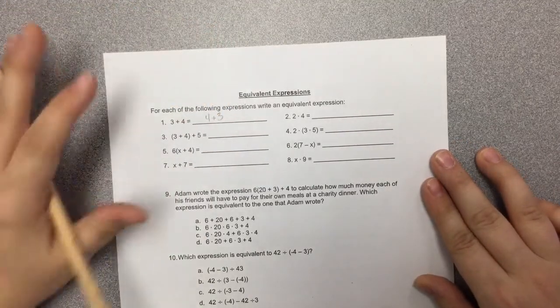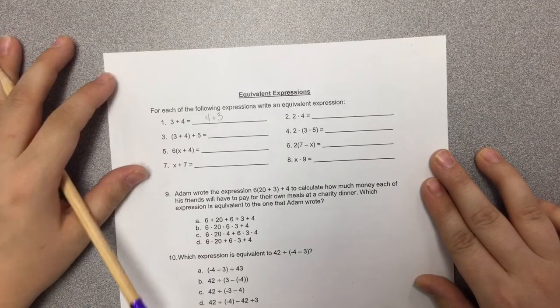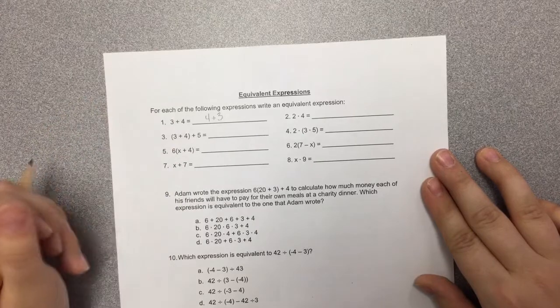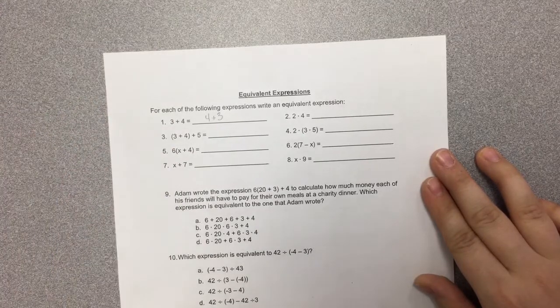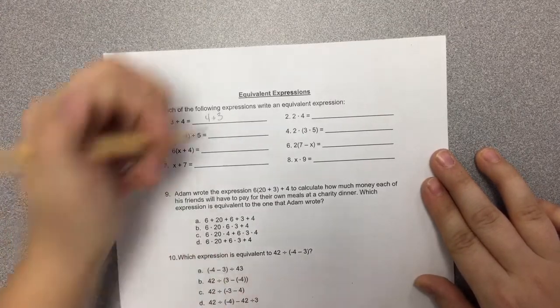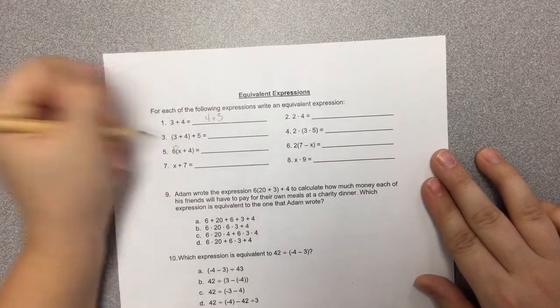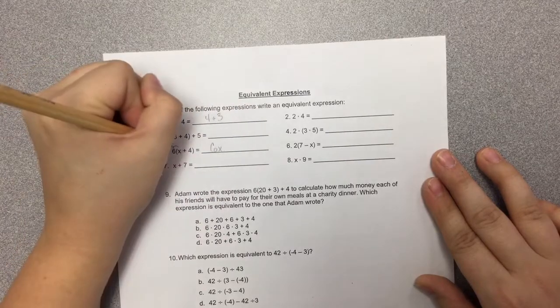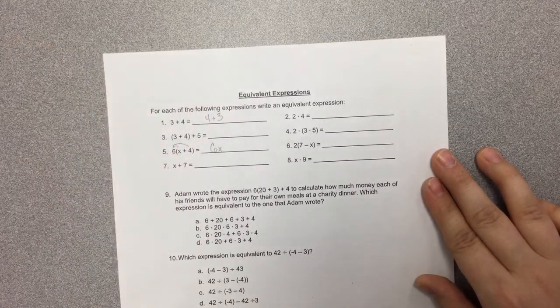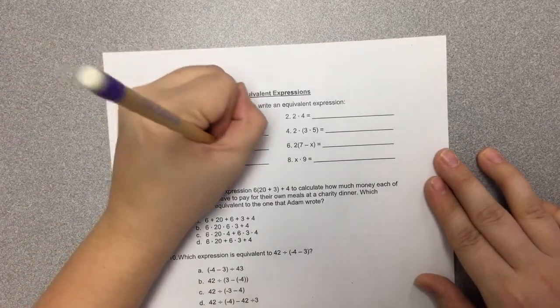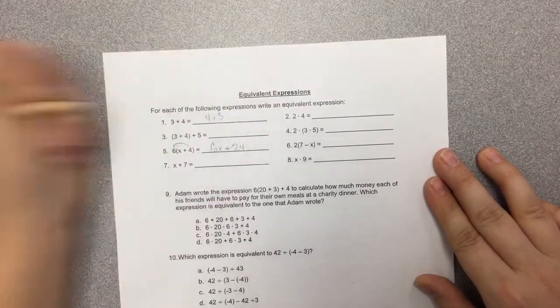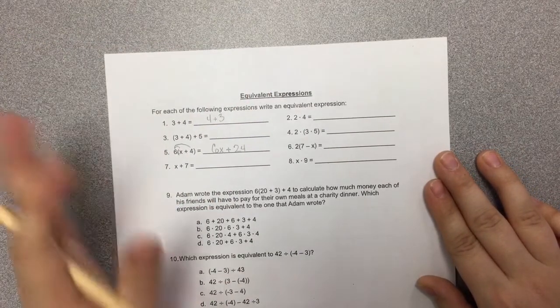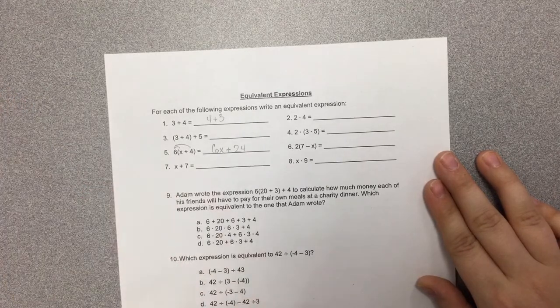If we were looking at 6 times the quantity x plus 4, remember our distributive properties that we practiced yesterday. That could look like 6 distributed or multiplied by x, so we're gonna write 6x, and then 6 distributed to 4, so 6 times 4, which is adding 24. So that part's pretty easy, you're just writing equivalent expressions.